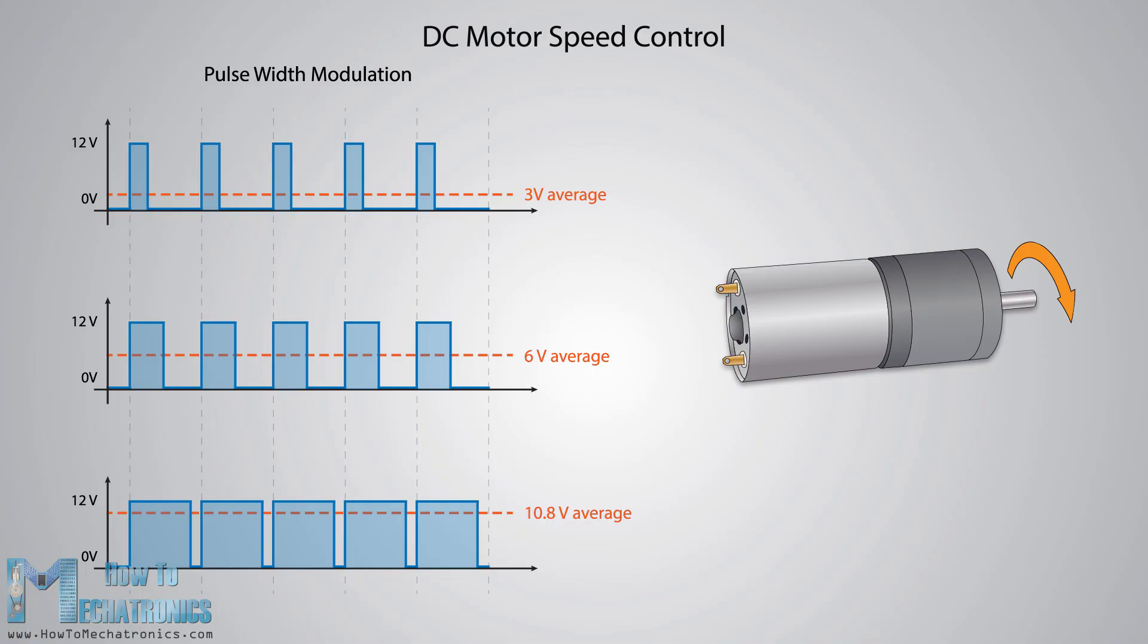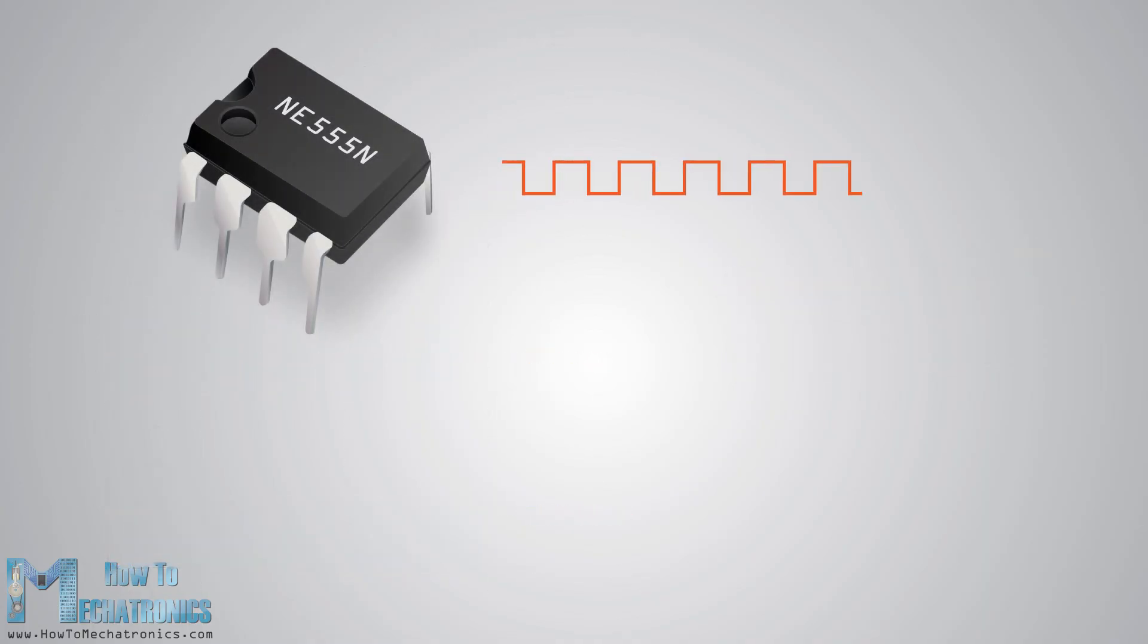The average voltage depends on the duty cycle of the signal, or the amount of time the signal is on versus the amount of time the signal is off in a single period. The 555 timer is capable of generating PWM signals when set up in astable mode.